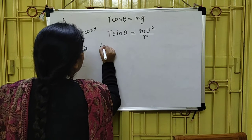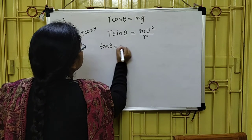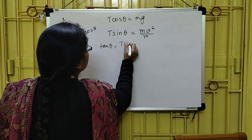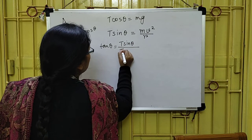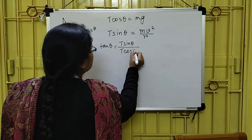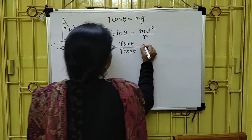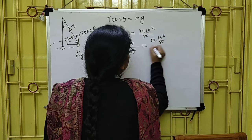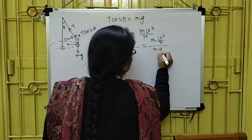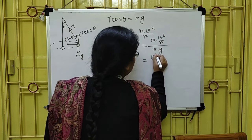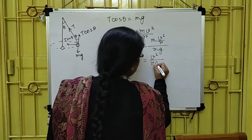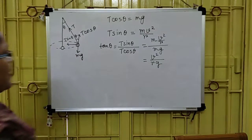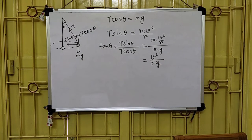From these two equations I can write: tan theta = (T sin theta) / (T cos theta) = (Mv² / R) / Mg = v² / Rg. So tan theta = v² / Rg.